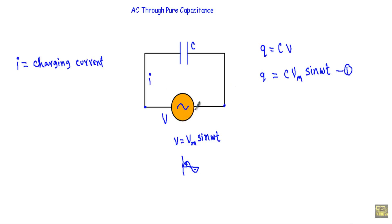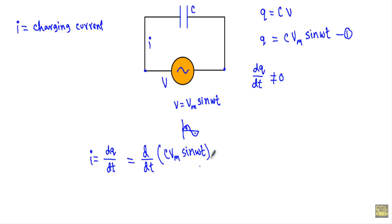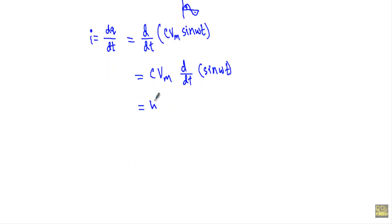Since I am applying an alternating voltage, the change of charges in the capacitor plates will not be constant. Therefore, our dQ/dt will not be equal to zero. Therefore, I can calculate the instantaneous current I using dQ/dt by taking the derivative of instantaneous charge. Our dQ/dt will be equal to d/dt of C·Vm·sin(ωt). The capacitance C and Vm are constant quantities, so I will take them out of the derivative sign: C·Vm · d/dt of sin(ωt). Taking the derivative of sin(ωt) with respect to time.